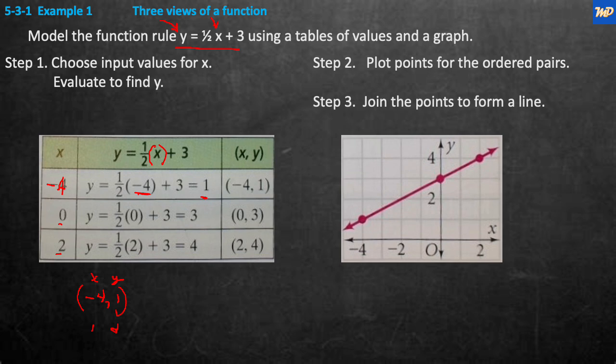For x = -4: ½ × (-4) = -2, and -2 + 3 = 1. So the ordered pair is (-4, 1) — that's the x value and y value, or independent and dependent.